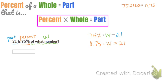To solve for w, I divide both sides by 0.75. When you do that, you get w equals 28.